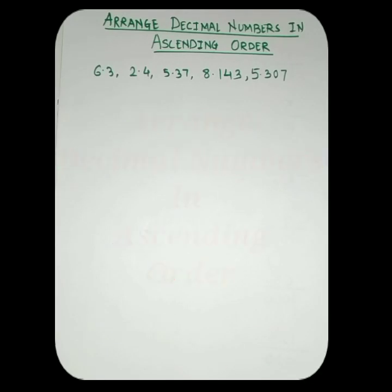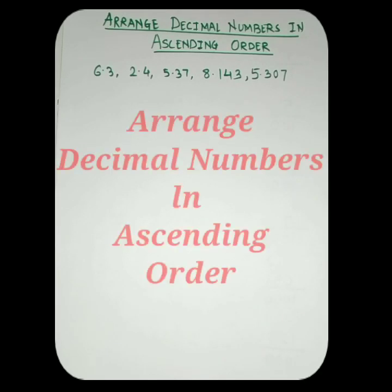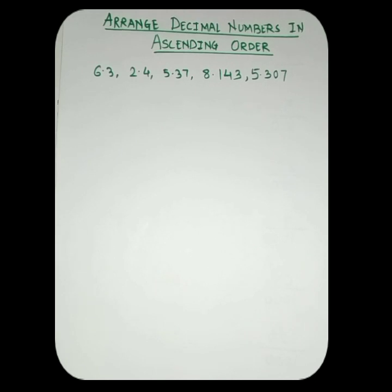Let's see how to arrange the decimal numbers in ascending order. For arranging the decimal numbers, first we have to convert them into like decimal numbers. What is like decimal numbers?